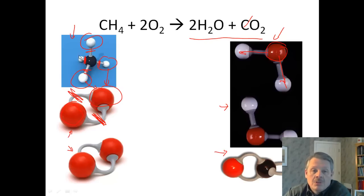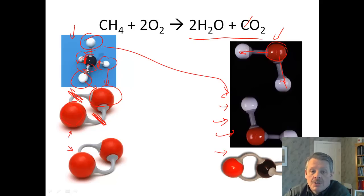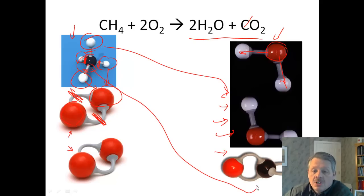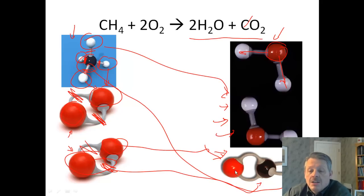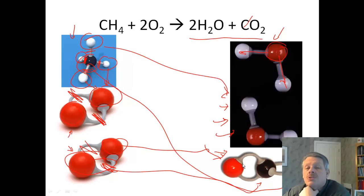Similarly, the other two hydrogens go over to form the second water molecule. The carbon that's left comes down, and the two oxygens break apart — one goes on each side of the carbon — and that makes CO2.